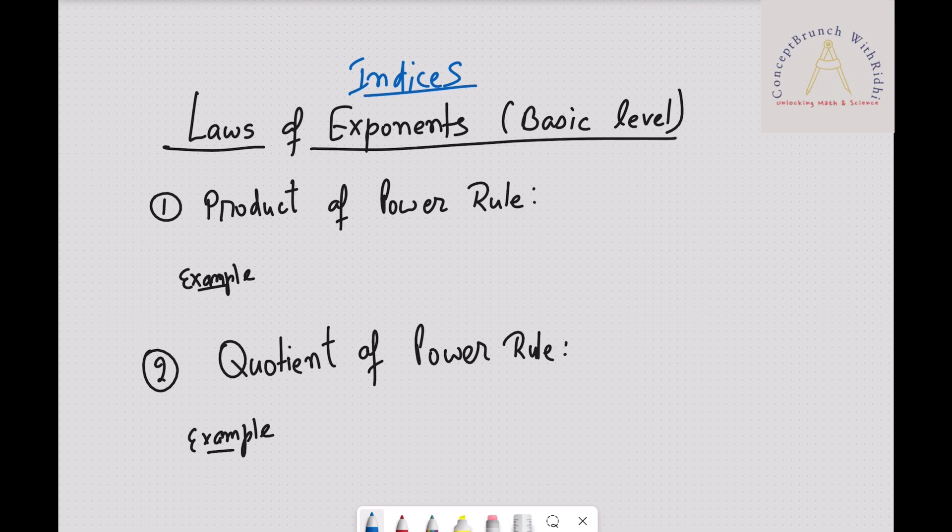Let's start with the mathematical rules. First of them, the product of power rule. In that it says if the bases are same, for example a to the power m times a to the power n, simply we can write a to the power m plus n. So bases are same, power will be added. And just suppose in a quotient of the power rule, a to the power m divided by a to the power n, we can simply write a to the power m minus n.